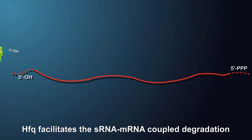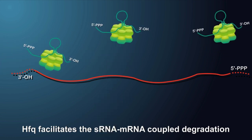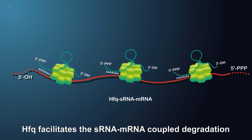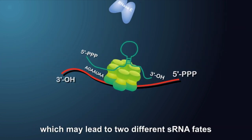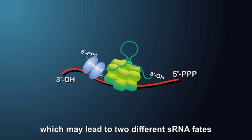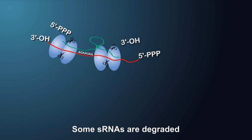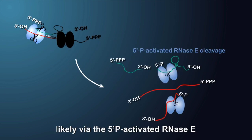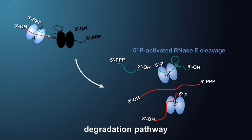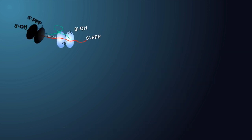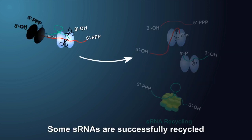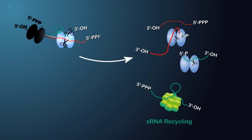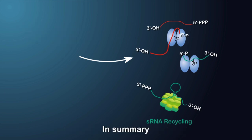Secondly, HFQ facilitates the sRNA and mRNA-coupled degradation, which may lead to different sRNA fates. Some sRNAs are degraded, likely via the 5'-phosphate-activated RNase E degradation pathway. Some sRNAs are successfully recycled.